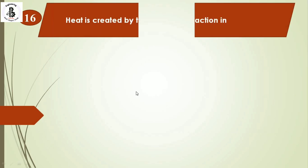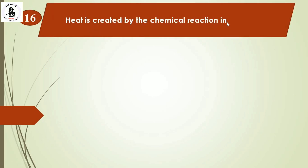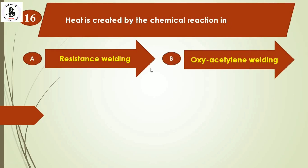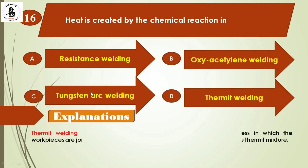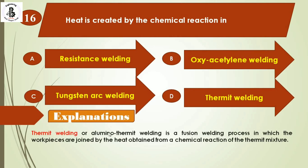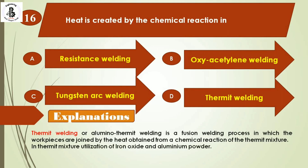The next question: heat is created by chemical reactions in — Option A: resistance welding, Option B: oxy-acetylene welding, Option C: tungsten arc welding, Option D: thermite welding. In thermite welding, the workpiece is joined by heat obtained from the chemical reaction of a thermite mixture — iron oxide and aluminum — which produces a molten form. This process is similar to casting. The right answer is Option D: thermite welding.